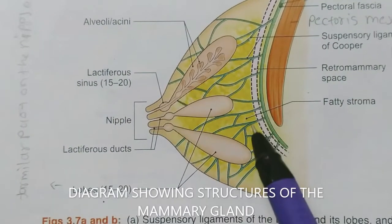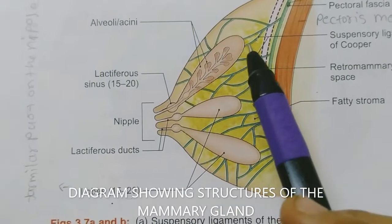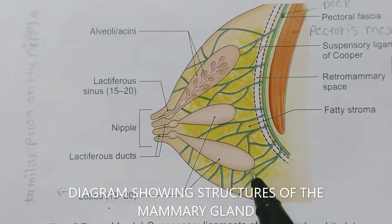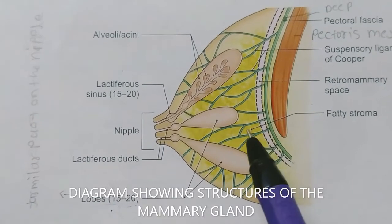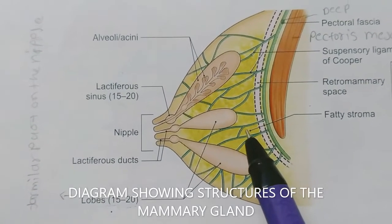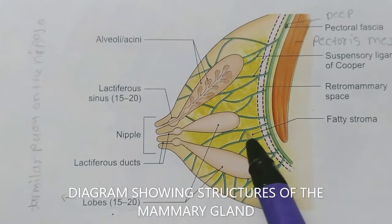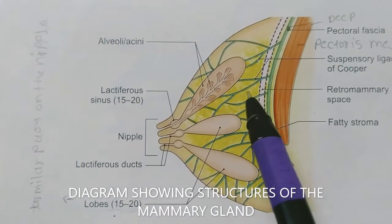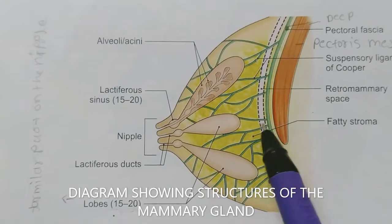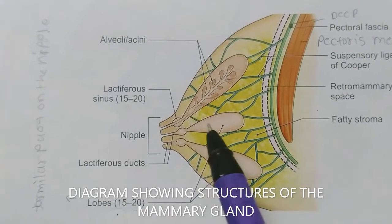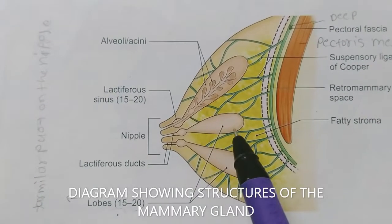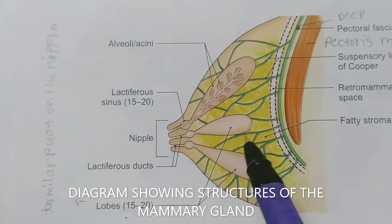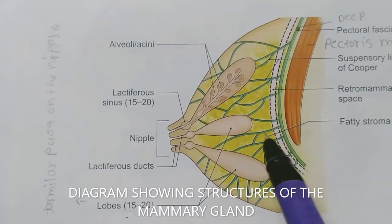The third structure is the stroma, which is the supporting framework. It is partially fibrous and partially fatty. The fibrous septa connect the tubular gland to the pectoral fascia and are known as the suspensory ligament of Cooper, which anchors the skin and gland to the pectoral fascia.